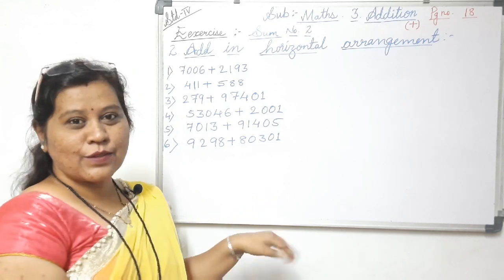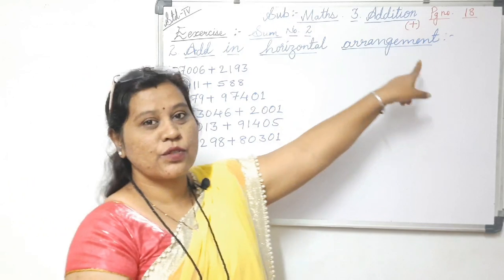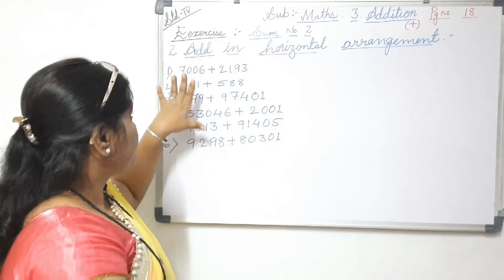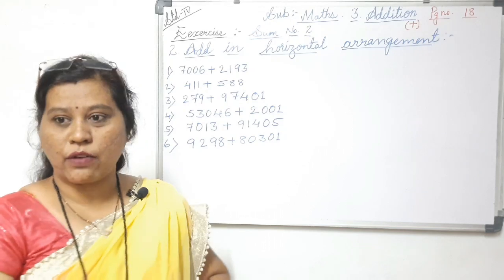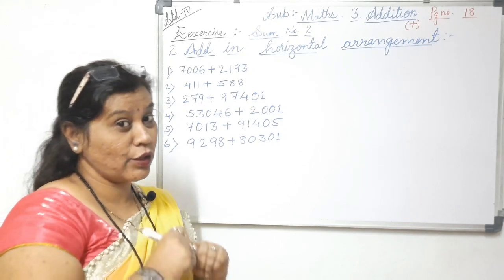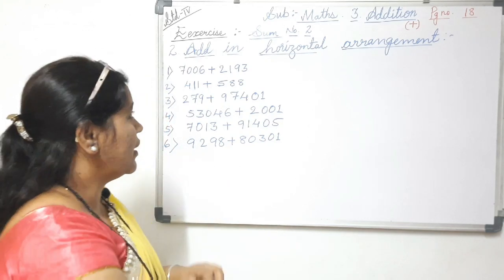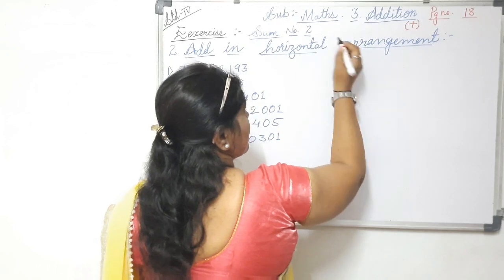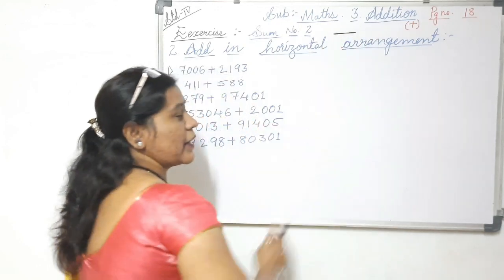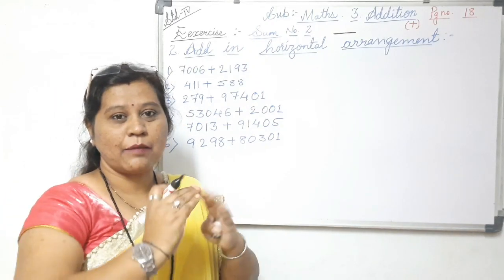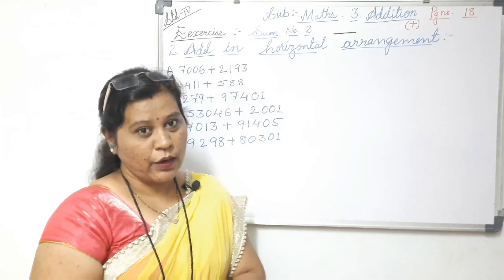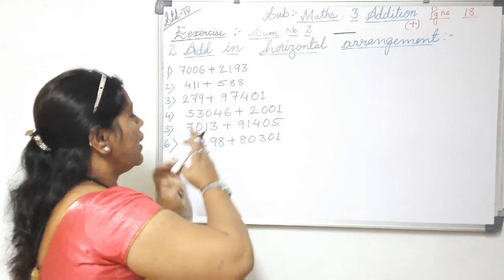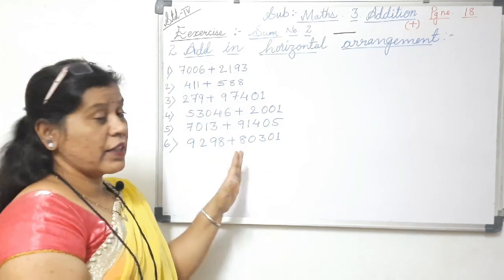Now in this session we are going to learn how to add given numbers in horizontal method. Horizontal means a sleeping line — not adding numbers one below the other as in vertical method. Here you write the numbers straight and start adding according to place values. There are six sums altogether.